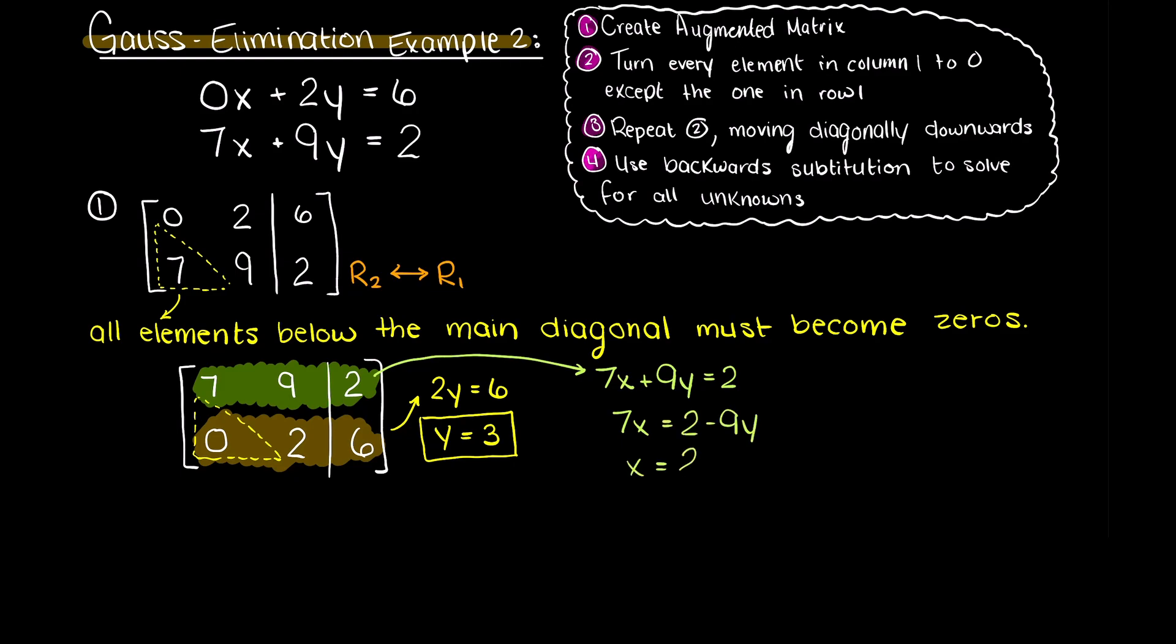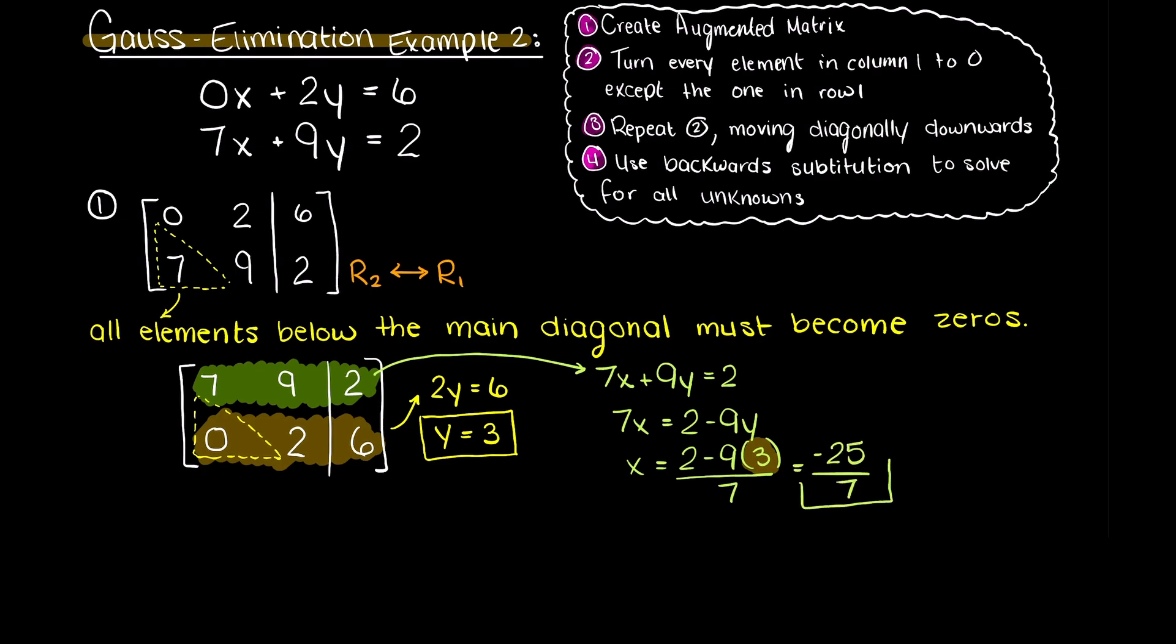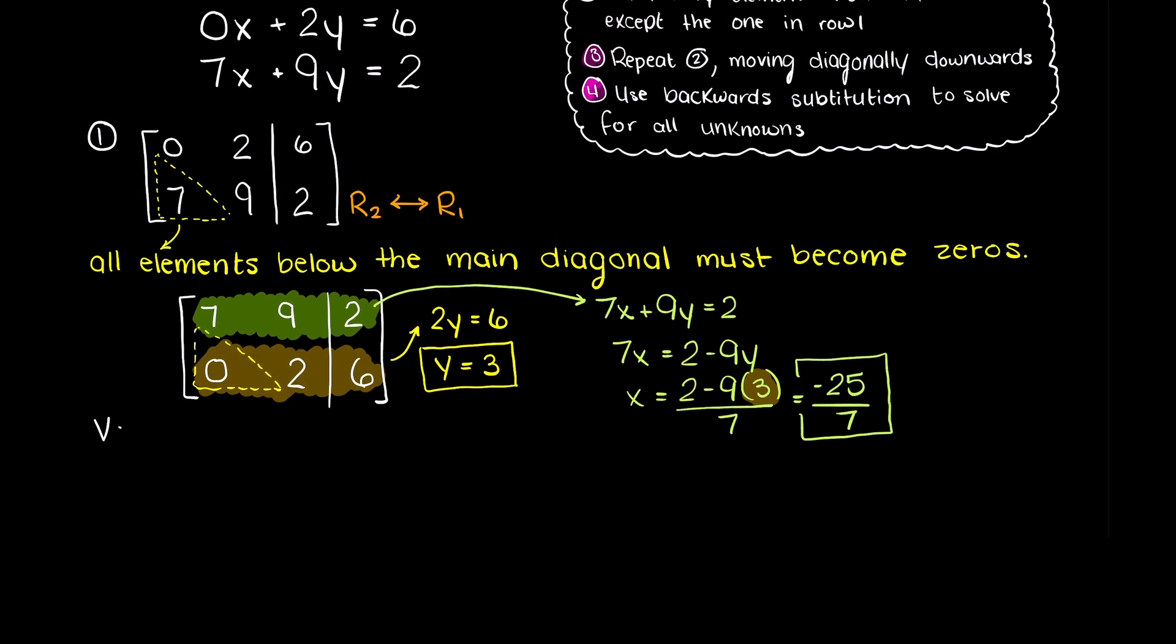So, we have 7x plus 9 equals 2. Plugging in our y value, we have the following equation. Solving, we can see that x is equal to minus 25 over 7.